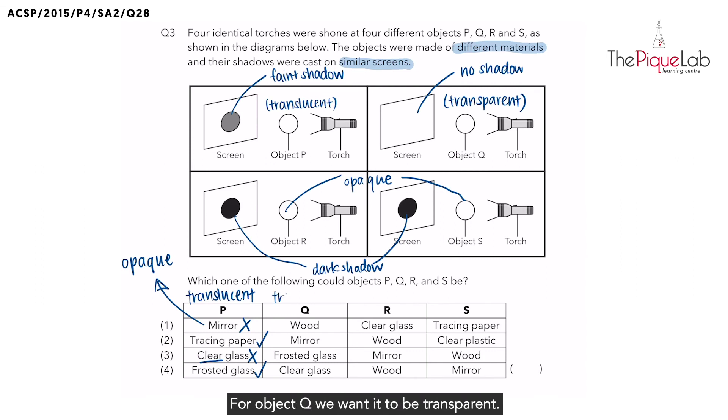Now let's take a look at object Q. For object Q, we want it to be transparent. So we are left with option 2 and 4. We have mirror as one of our options, but as mentioned earlier, the mirror is opaque, so we will put a cross. And then we have clear glass, yes, clear glass is transparent.